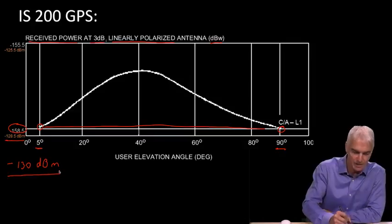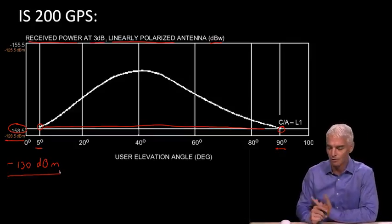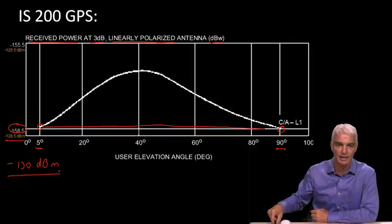although we didn't practically gain it, just in the accounting we gained it. But this number, -130 dBm, lives on. In most simulators, you'll see that's specified as the minimum signal strength, although in real life, the signal's actually stronger by 1.5 dB.